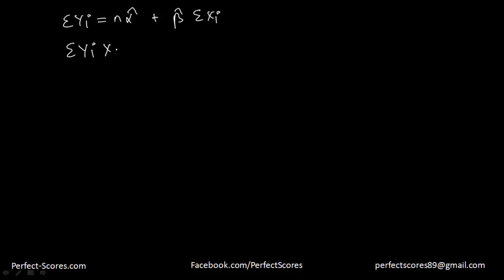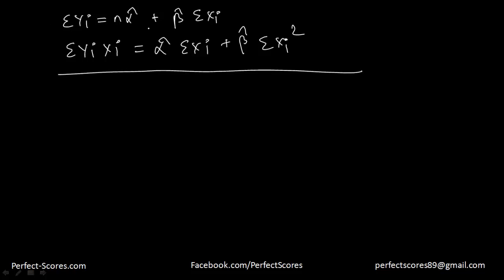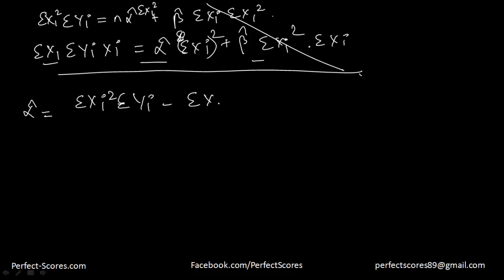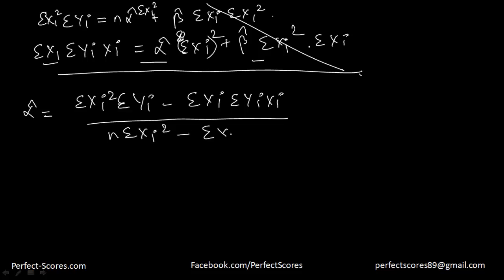Summation of y_i and summation of x_i is going to be alpha hat into summation of x_i plus beta hat into summation of x_i squared. And we calculated the value of alpha hat by multiplying by summation of x_i squared and summation of x_i, so that at the end of the day I can cancel these two things out. From here, I can get the value of alpha hat to be equal to summation of x_i squared into summation of y_i minus summation of x_i into summation of y_i x_i, divided by n times summation of x_i squared minus summation of x_i whole squared.